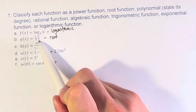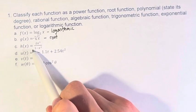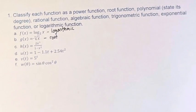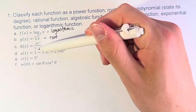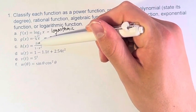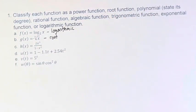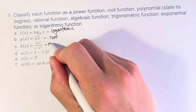h of x is equal to 2x cubed divided by 1 minus x squared. This is equal to one polynomial divided by another, right? 2x cubed is a polynomial, 1 minus x squared is a polynomial. Therefore, this is a rational function.